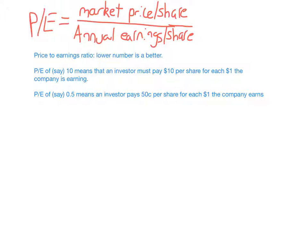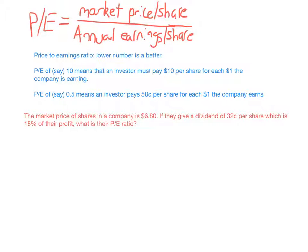It's best to compare the P/E ratio of companies in the same market — for example, two technology companies rather than comparing one that makes cars to one that makes computers. You can still compare different industries, but the same field makes comparison better, since some companies have to spend a lot to make something while others don't. So let's look at an example: a company's market price per share is $6.80, they give a dividend of $0.32 per share, which is 18% of their profit. We want to find their P/E ratio.